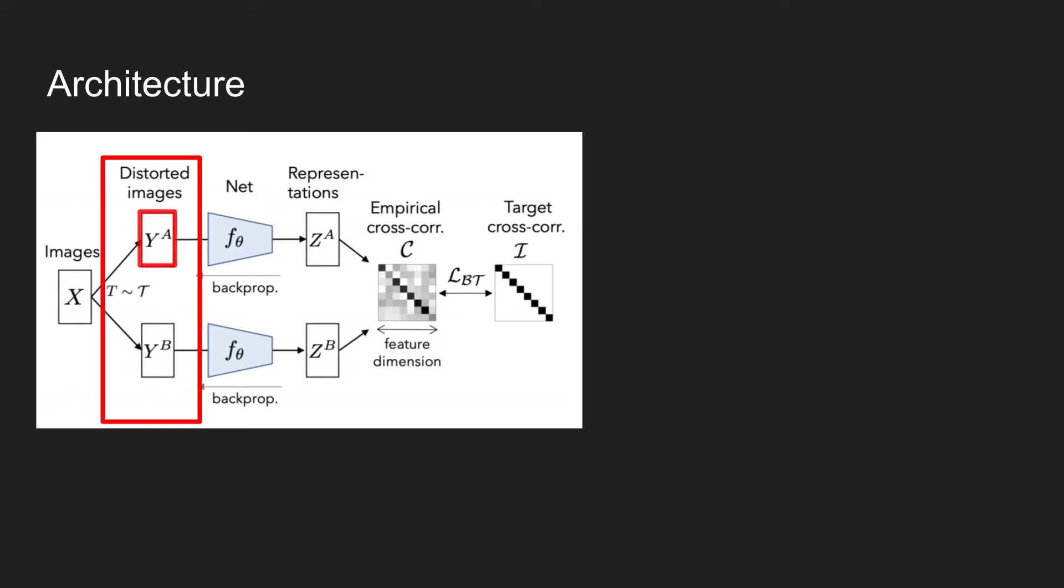These two images with different transformations are represented as Y superscript A and Y superscript B. After these images are forwarded to the network, each network produces a vector representation Z. The dimension of ZA and ZB in the figure is the same.